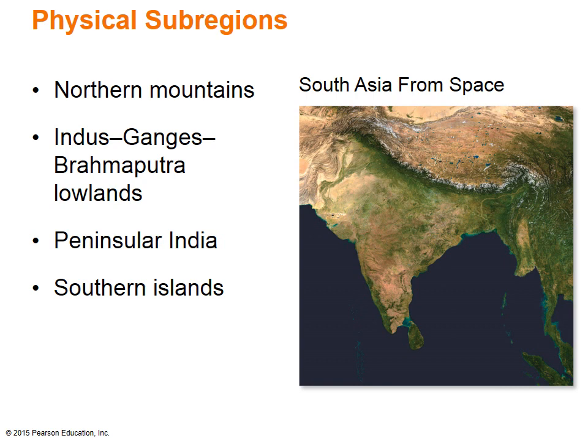South Asia has four physical sub-regions, which are separated from the rest of the Eurasian continent by a series of sweeping mountain ranges. The first region is the northern mountains, containing the world's highest mountains, including the Great Himalayan Range with Mount Everest in Nepal at 29,029 feet, the largest mountain peak in the world. Connecting to this range is an equally high Karakoram range to the northwest and Central Asia. These mountains were produced by tectonic activity, where numerous earthquakes still occur today, causing extreme damage and loss of human life.